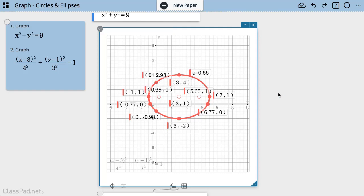There are all my key features, so I have my foci, my vertex, the center, the x and y intercepts and my eccentricity all displaying at the same time. So that's just the basics on graphing circles and ellipses and taking a look at their key features using conics. For more classpad.net tips, feel free to subscribe to our channel. Thanks for watching.